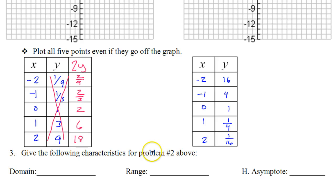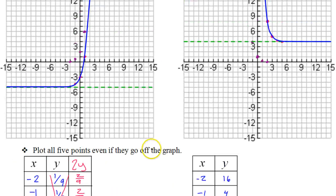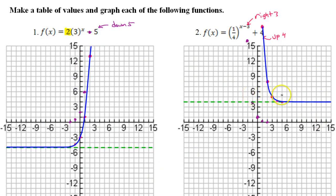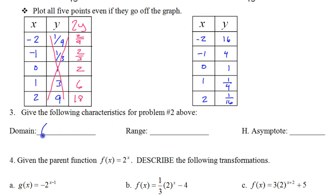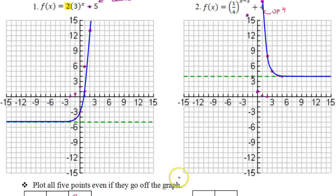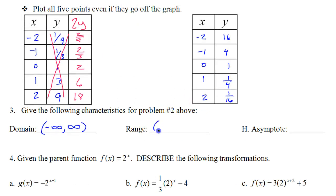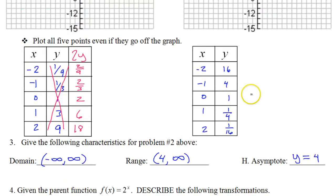Problem number 3 refers back to problem number 2. The domain, which is the x values, is from negative infinity to positive infinity because the graph goes left forever and right forever. All exponential functions have a domain of negative infinity to positive infinity. The range is more limited — give it from bottom to top. The lowest value is the asymptote of 4, so the range is 4 to infinity with a round parenthesis on 4, since it's an asymptote and never touched. The horizontal asymptote is the line y equals 4.